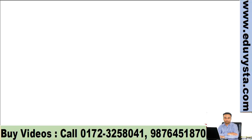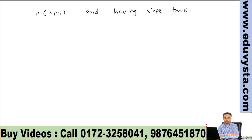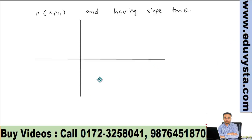Let's see the parametric form of a straight line, which is helpful in solving some geometrical problems. Consider a straight line passing through point (x1, y1) and having slope tan θ. This line passes through point P(x1, y1) with slope tan θ, meaning the angle with the x-axis is θ. Suppose we want to find points on this line at distance r from point P.